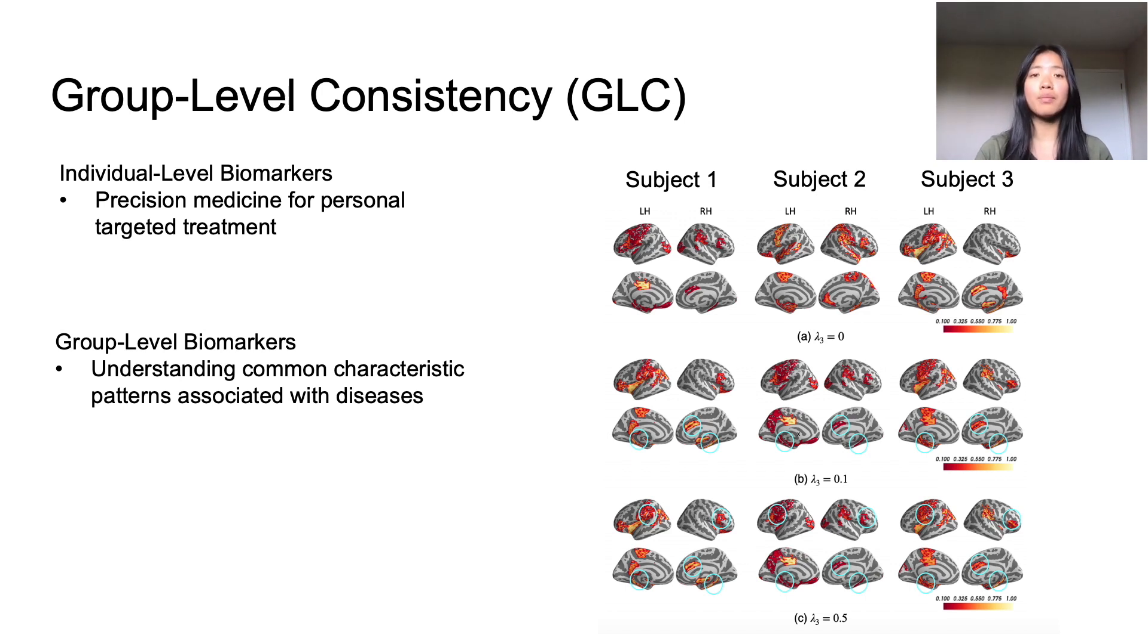So if we start at the top layer, where the lambda value is 0, indicating no GLC, there are no circled regions, meaning that the three individuals did not share a single region of interest or biomarker. Whereas in the last row, where there's a high GLC, we see that there are five regions that are common to all three individuals. Therefore, this network identified that these five nodes or regions of interest are all biomarkers for all three subjects.